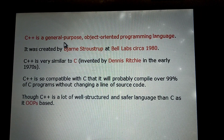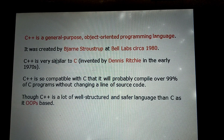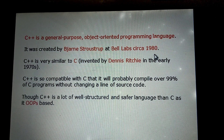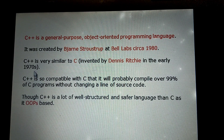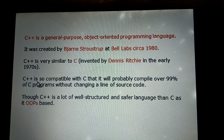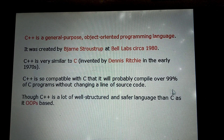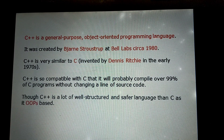C++ is a general purpose, object-oriented programming language. C++ is very similar to C. C was invented by Dennis Ritchie in the early 1970s. C++ is very compatible with C — in C++ we can compile 99% of C programs without changing a single line of source code.